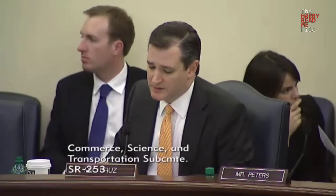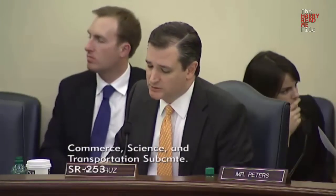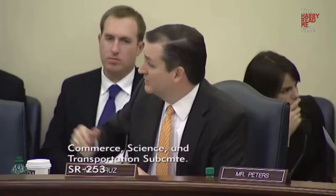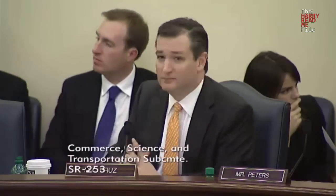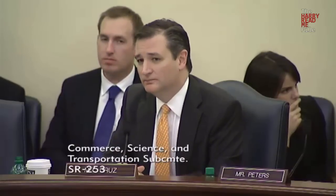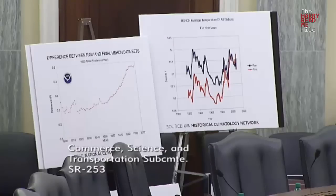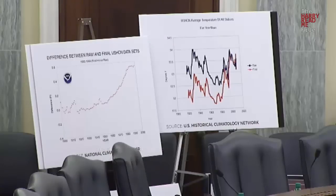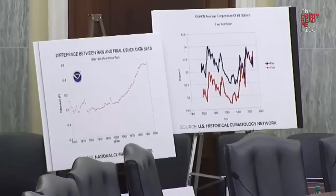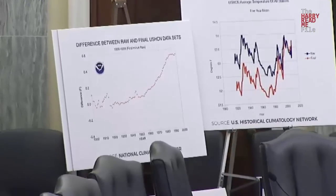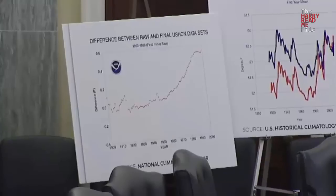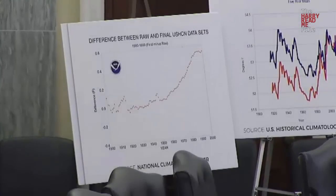These next two charts are from the United States Historical Climate Network. These are measurements from thermometers that are measuring climate change, and these in particular record the adjustments that NOAA has done to the climate data. The chart on the left shows that between 1900 and 1960, NOAA made relatively few adjustments, and they were relatively minor.